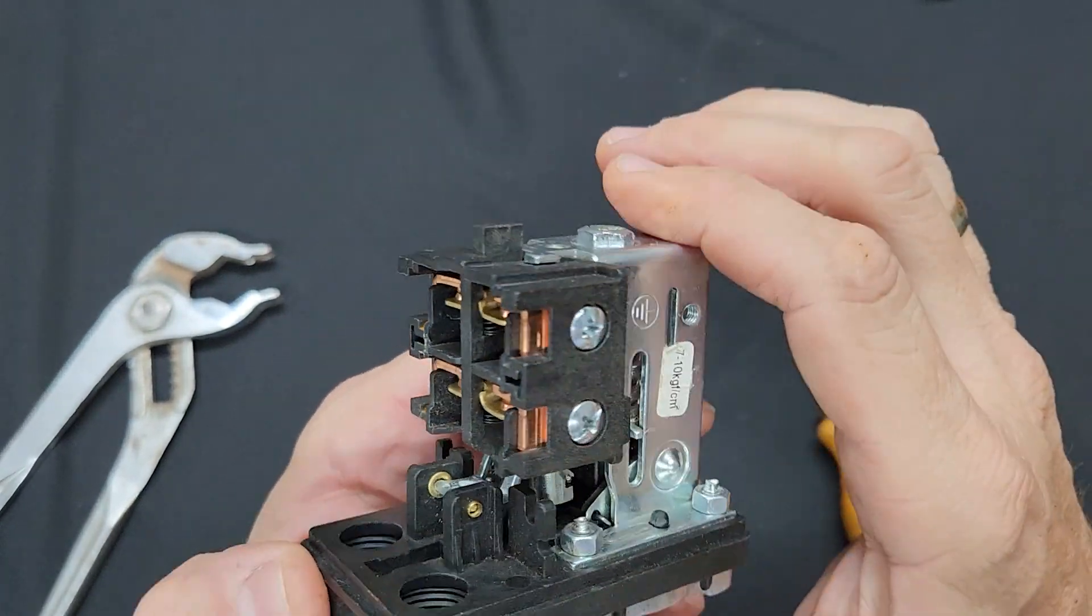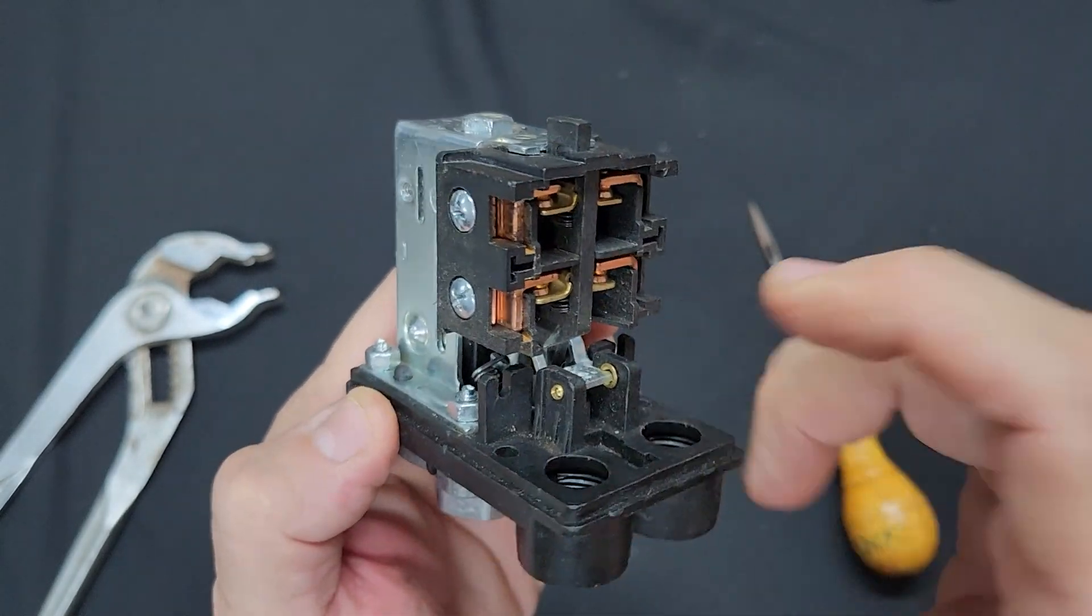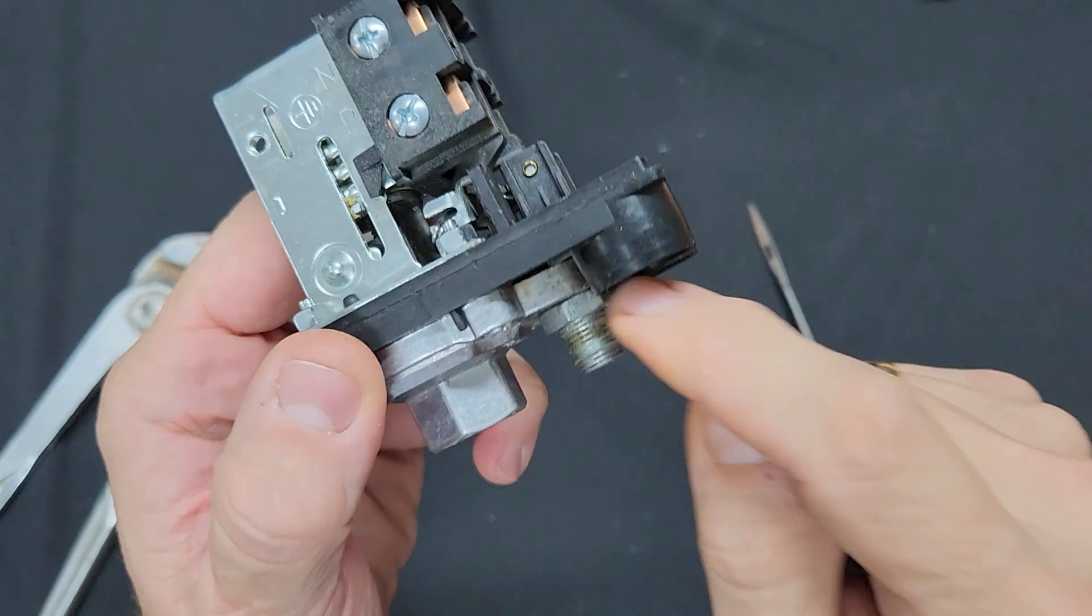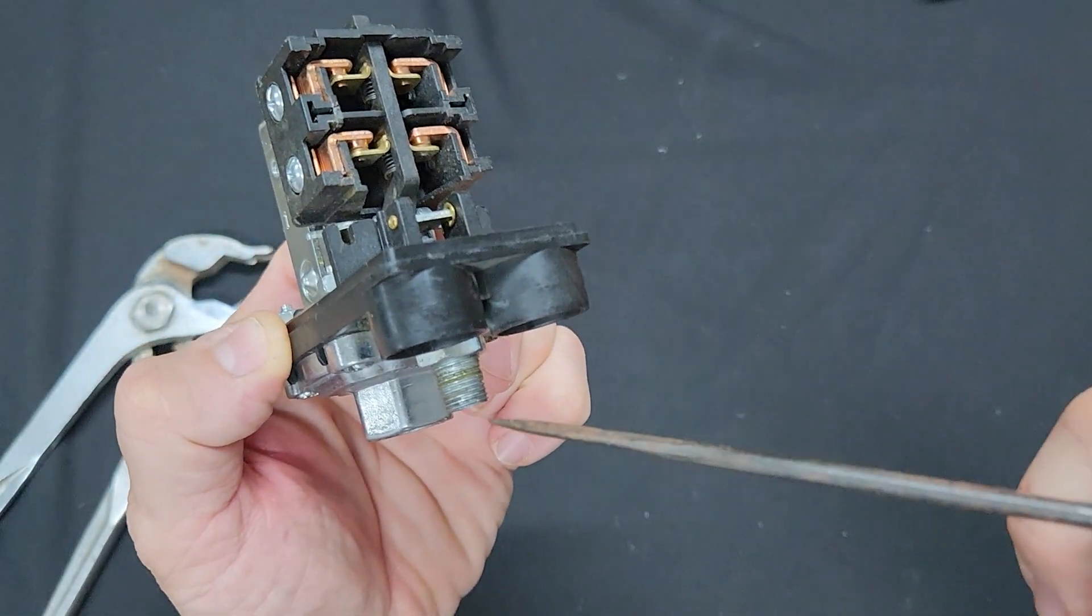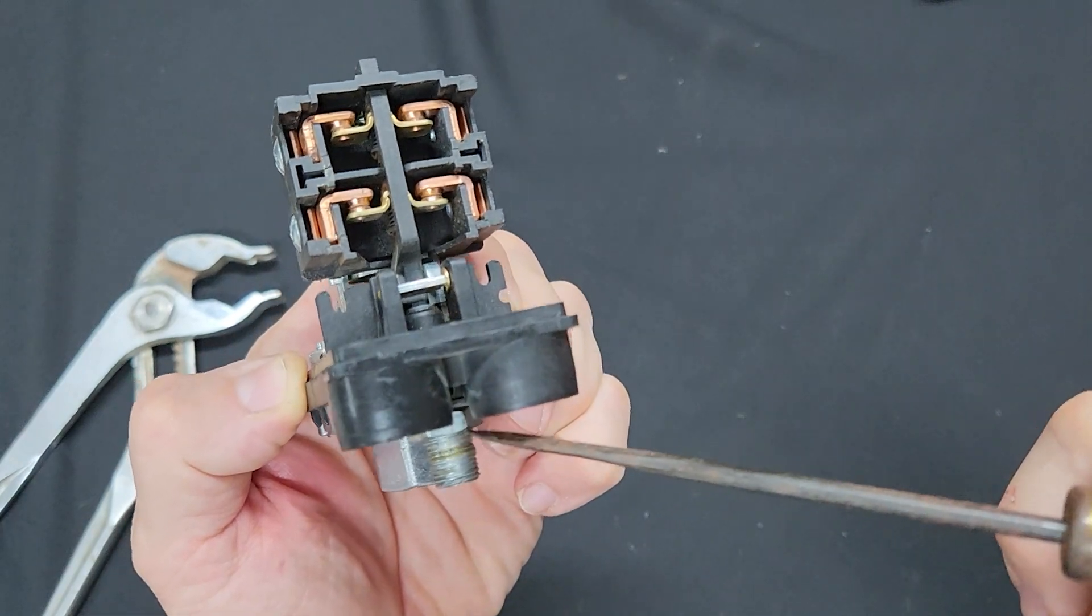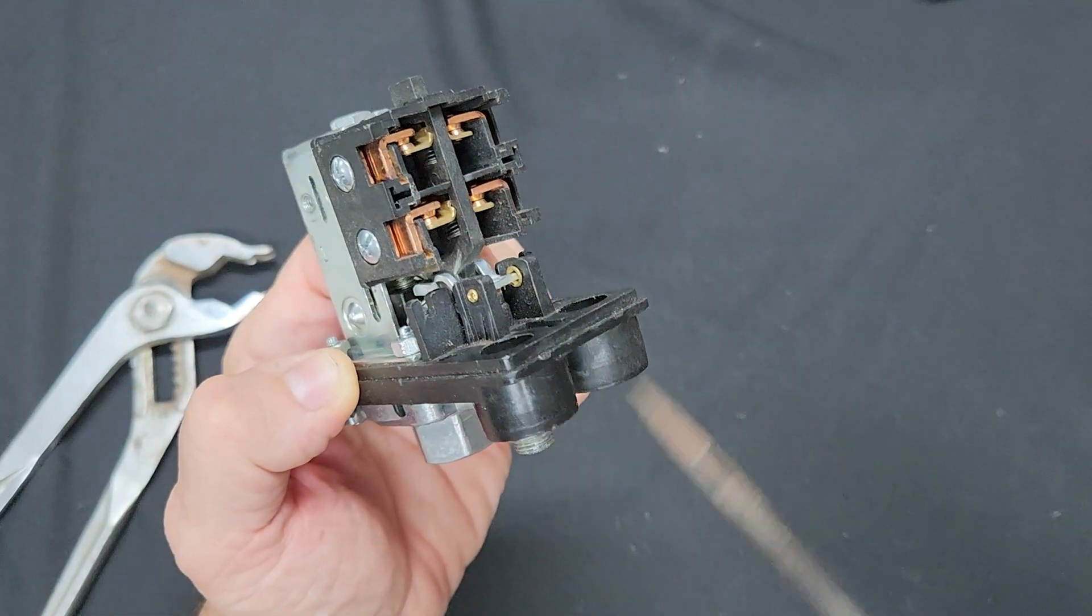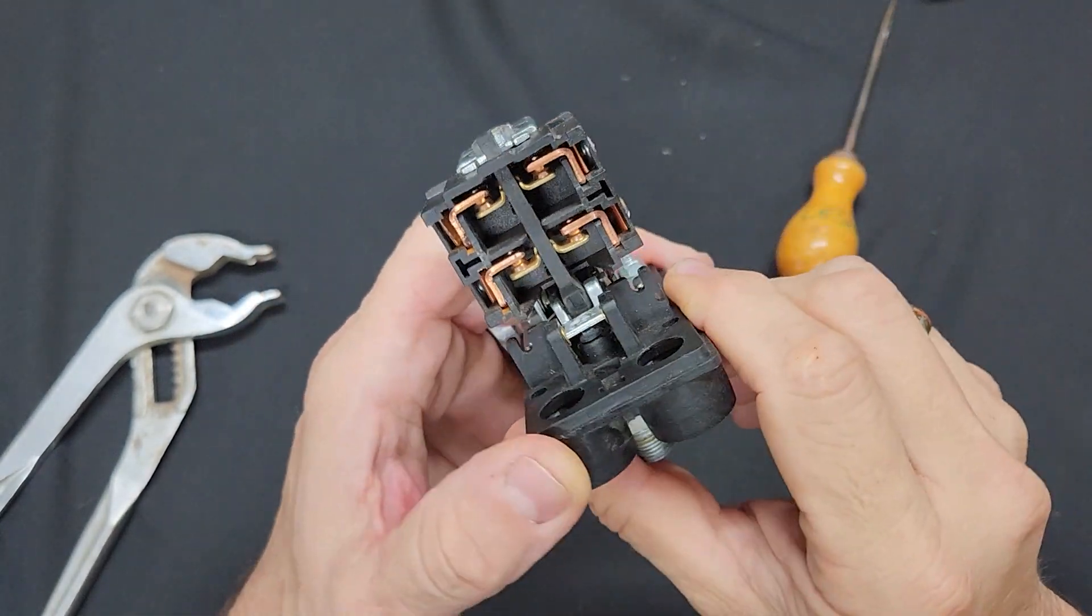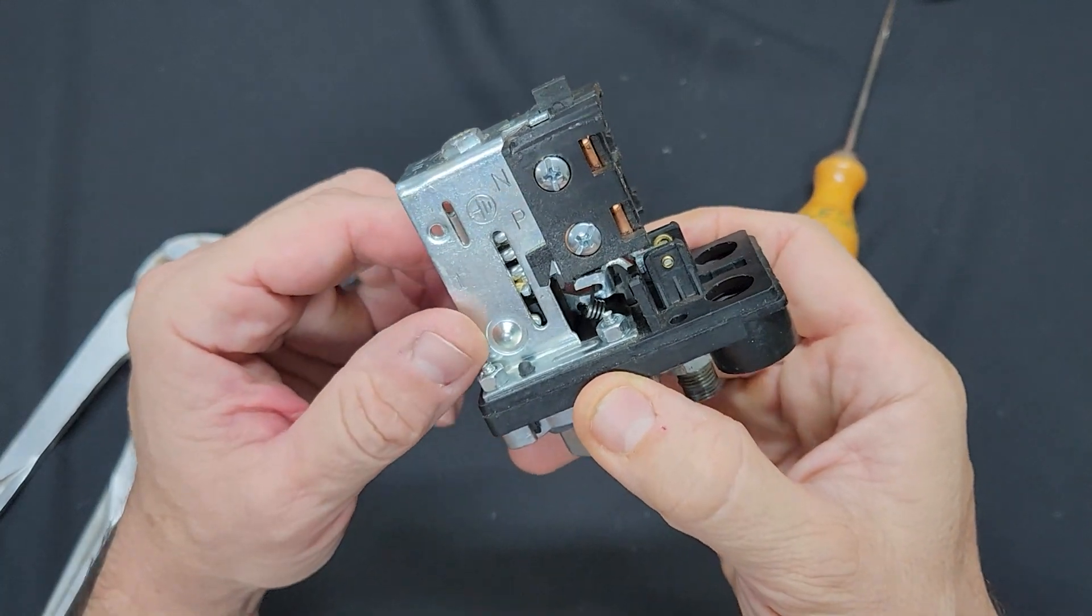And that's the way these cheap Chinese pressure switches work. They might be cheap, this just cost me fifteen dollars, but they're very very clever and they work a treat. And this unloader valve is a key integral part of any pressure switch. If this doesn't work, this whole unit really will not work properly and you need to get that repaired or in my instance replace the whole pressure switch.